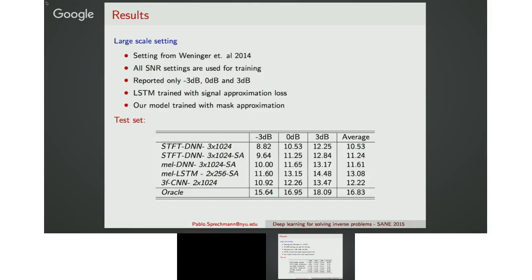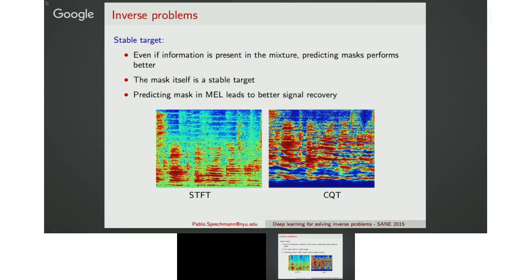A word on the role of the target: in source separation, there's a lot of information present in the mixture, and predicting the masks is a great idea. The masks are a very stable target — the deep neural network does not need to model the signals completely, just guess where the energy is, which is a much simpler task. Even so, using MEL features as targets — a more stable representation of the mask — gives a further boost, as verified by the LSTM paper results.